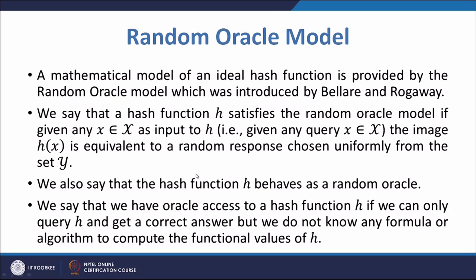A mathematical model of an ideal hash function is provided by the random oracle model, which was introduced by Bellare and Rogaway. We say that a hash function h satisfies the random oracle model if, given any x belonging to capital X as input to h, that is given any query x coming from the set X, the image h(x) is equivalent to a random response chosen uniformly from the set Y.